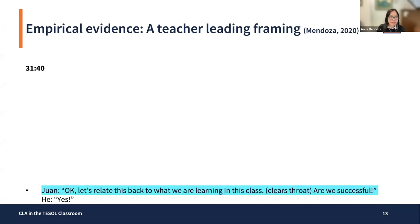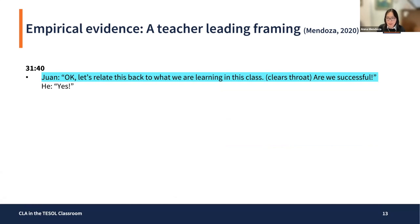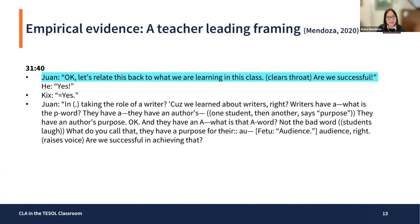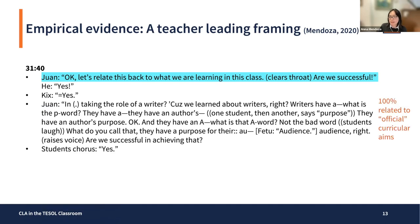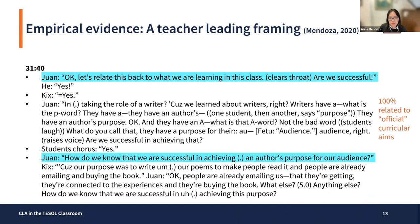Fifteen minutes later, Juan says, 'okay, let's relate this back to what we are learning in this class. Are we successful?' Students say yes. Juan says, 'in taking the role of a writer — because we learned about writers — writers have a... what is the P word?' Students say 'purpose.' 'They have an author's purpose. And they have an A word.' Fetu says 'audience.' Juan asks, 'are we successful in achieving that?' Students chorus yes. 'How do we know we're successful in achieving an author's purpose for our audience?' Kix says, 'because our purpose was to write our poems to make people read it, and people are already emailing and buying the book.' Juan says, 'people are already emailing us that they're getting connected to the experiences and they're buying the book. What else? How do we know we're successful in achieving this purpose?'